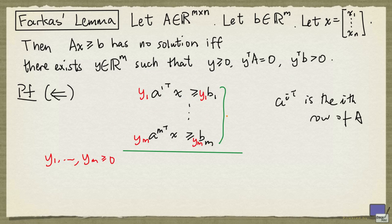And so what we can say is, the sum of yi a i transpose x, where i ranges from 1 to m, is at least the sum of yi times bi, as i ranges from 1 up to m.